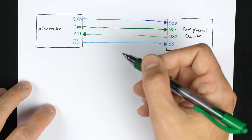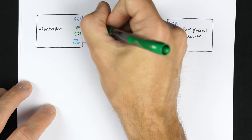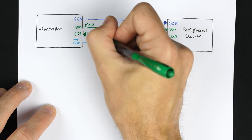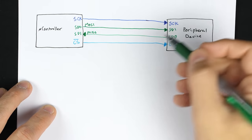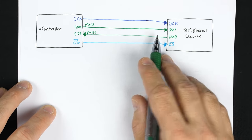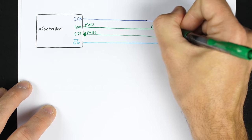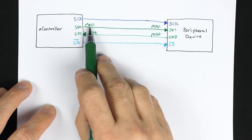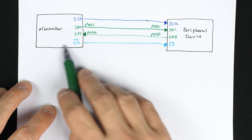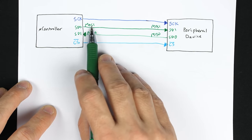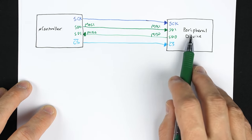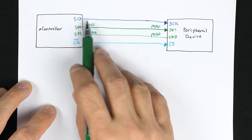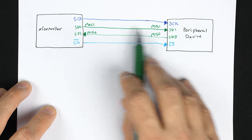Another common naming convention is MOSI (M-O-S-I) and MISO (M-I-S-O). These names apply to both ends of the link. MOSI stands for Master Out Slave In, indicating it's output on the master/controller side and input on the peripheral side. MISO is Master In Slave Out. This convention has the advantage of being the same name on both ends of the link.